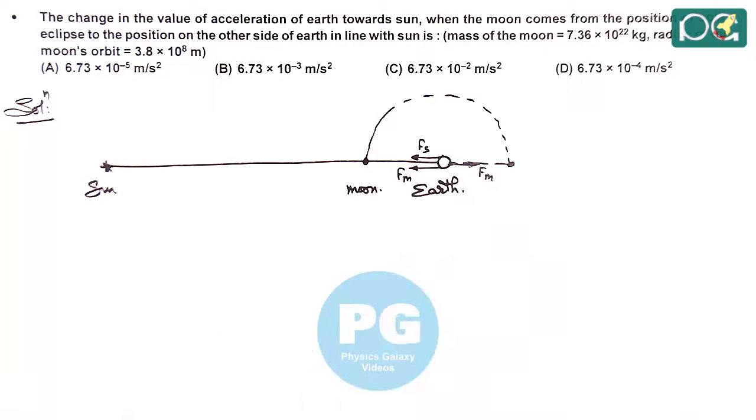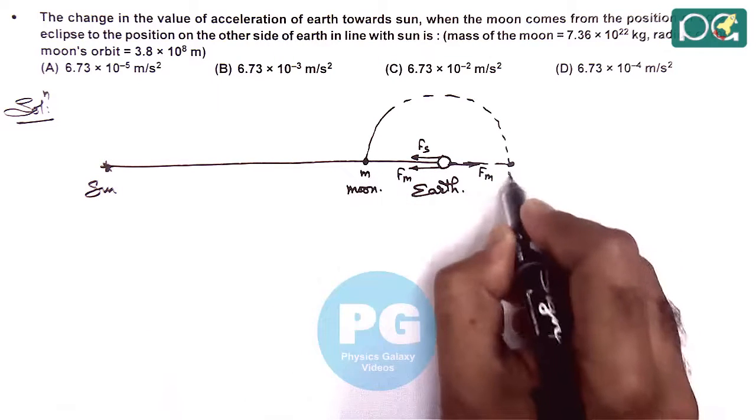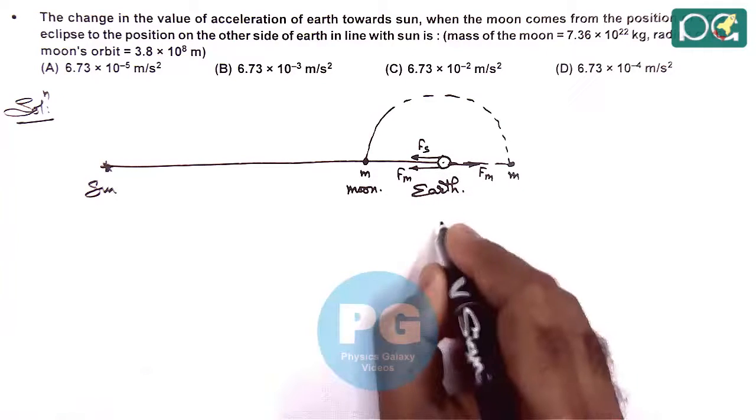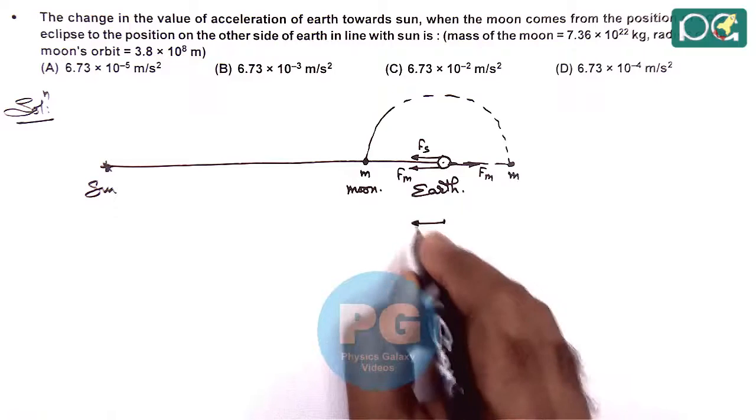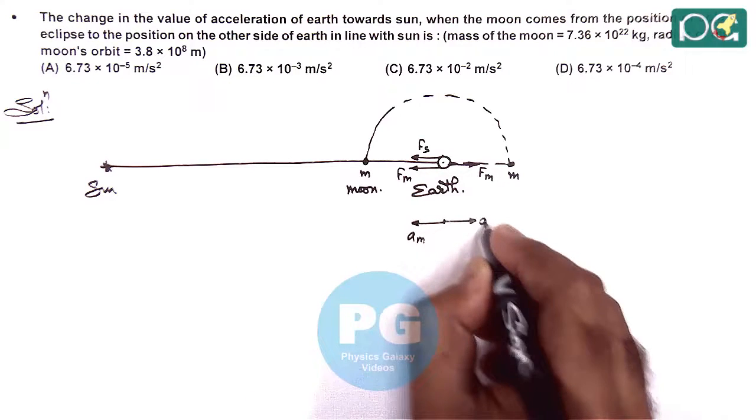Fm changes the direction. So if we consider the mass of moon to be m, then here the only acceleration which is changing is due to moon. So we can say initially the acceleration due to moon was toward left and finally it is changing toward right.